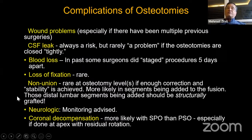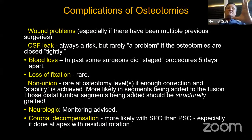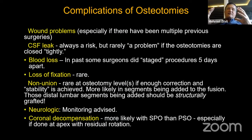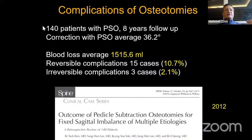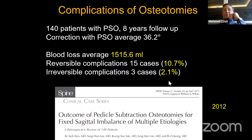You must be aware of coronal decompensation, especially for grade 1 and 2 osteotomies — if you haven't done proper releasing, one side may close while the other may not, creating coronal imbalance and scoliosis. One study mentions a complication rate in 140 patients with average blood loss of about 1,500 mL. Reversible complications are about 11% and irreversible about 2%. Other series report complication rates up to 40%, so we must tell patients and relatives that complication rates may be higher.